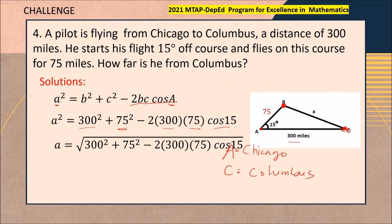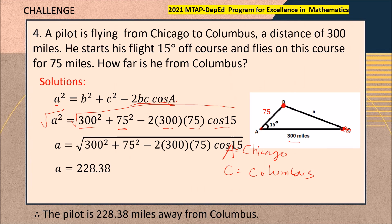Continuing, we can square root both sides of our equation. Using your scientific calculator and inputting all the values, you will get 228.38. Therefore, the pilot is 228.38 miles away from Columbus. That's it for this challenge problem.